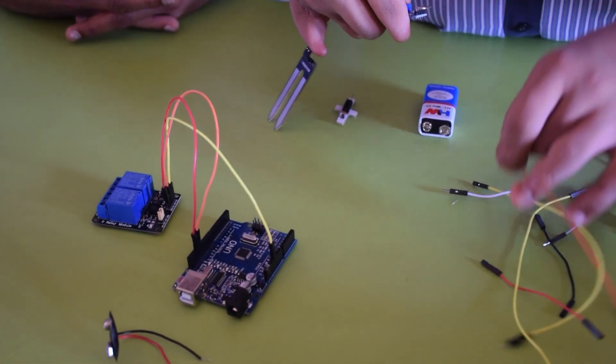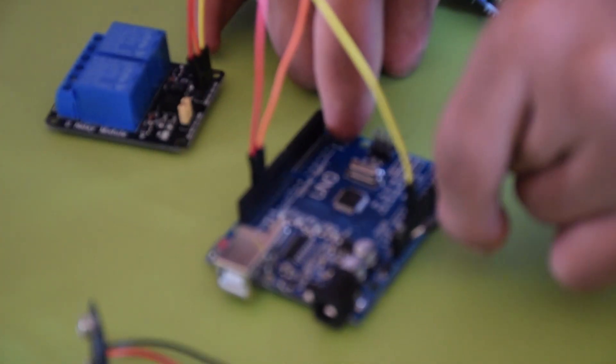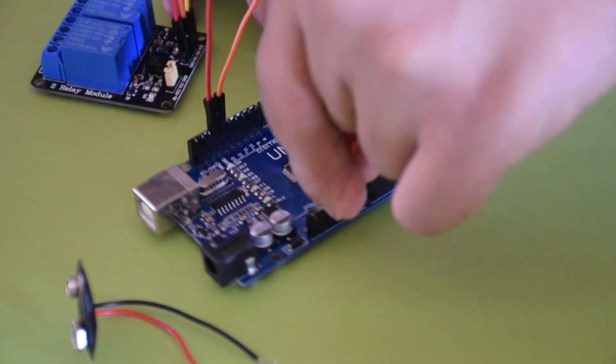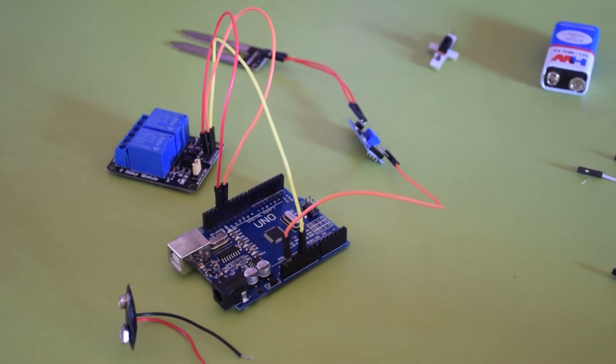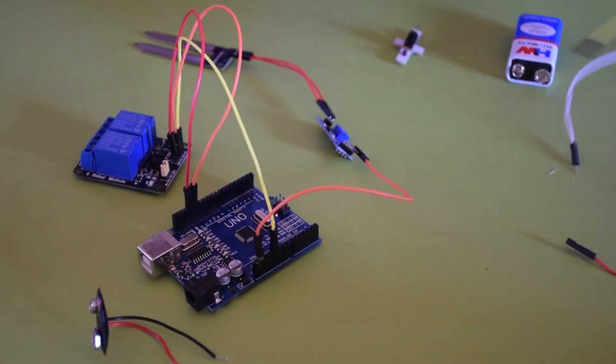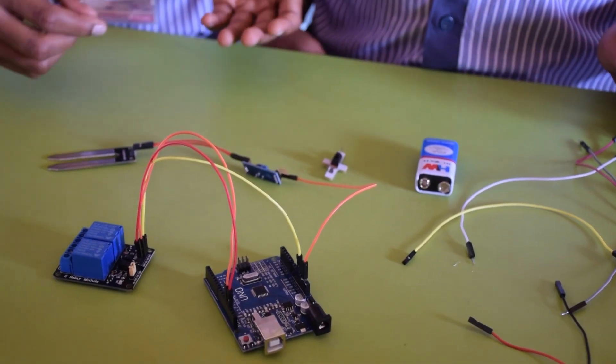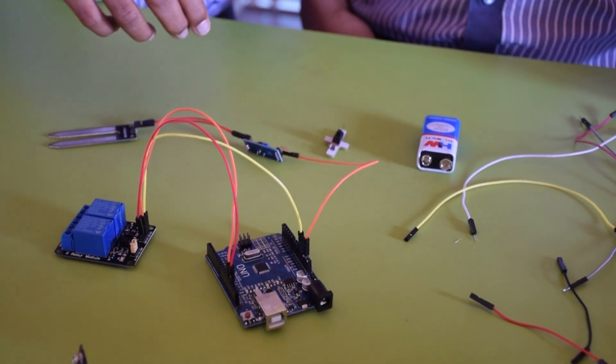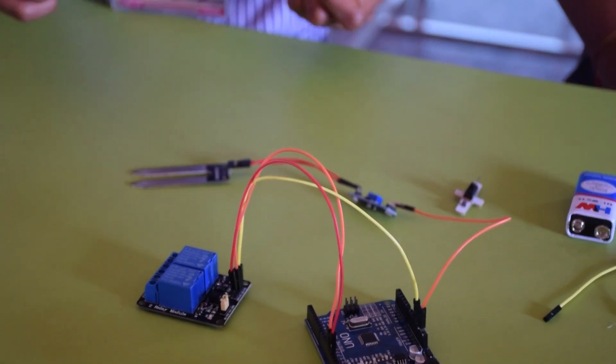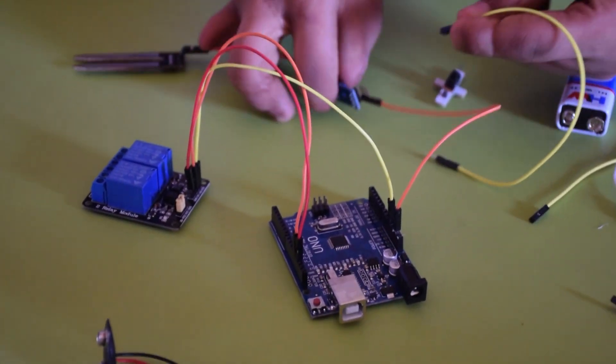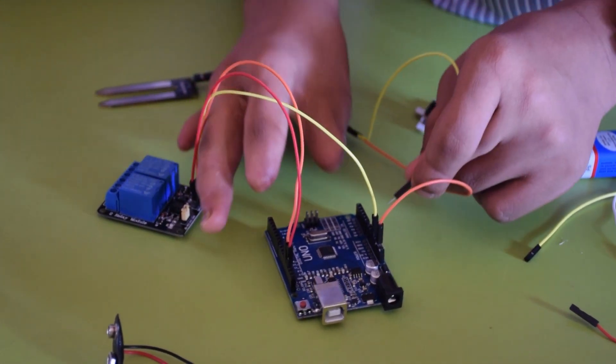Step 3: Then, we connect the ground to the ground. Step 4: Next, we are going to connect the ground port in the Moisture Sensor controller. Now, we are going to connect the sensor's ground port to the ground port in the Arduino.